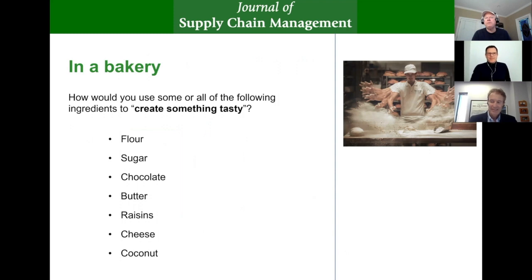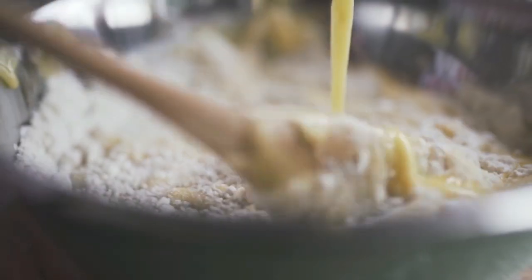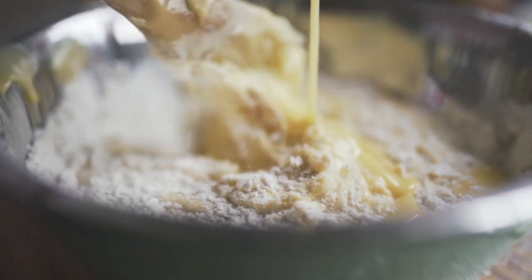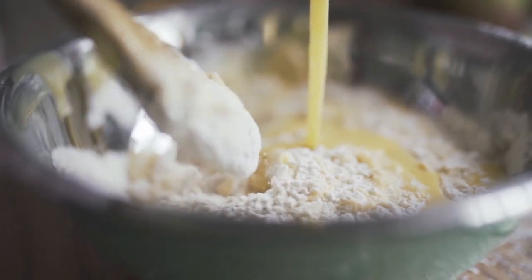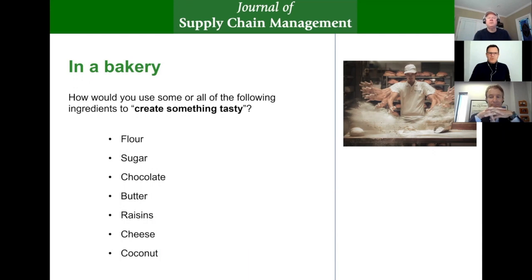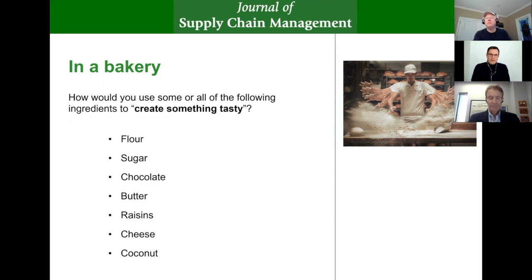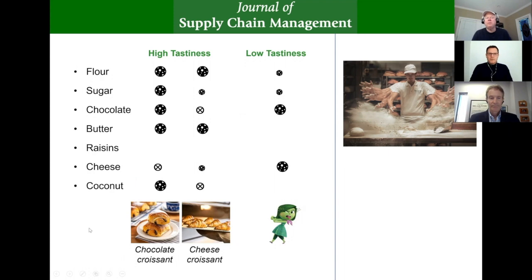In order to get all of us into thinking in terms of recipes, let me take you for a moment into a bakery. We have ingredients here — flour, sugar, and so on — and our job is to create something tasty, something people will buy. Our outcome variable, if you want, is tastiness. Not all products use the same ingredients; each one will probably be made from a specific combination of ingredients. Some come with chocolate and some without. In other words, it's a question of creating smart combinations.